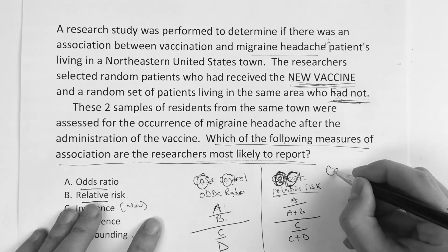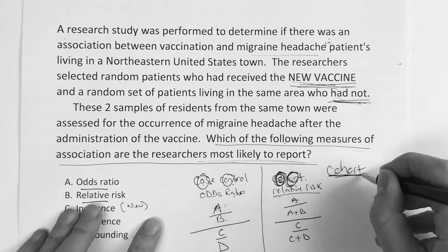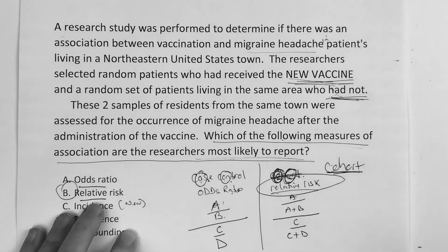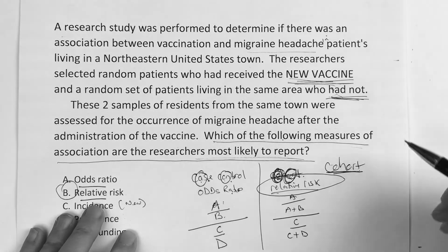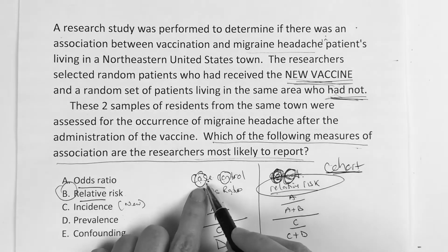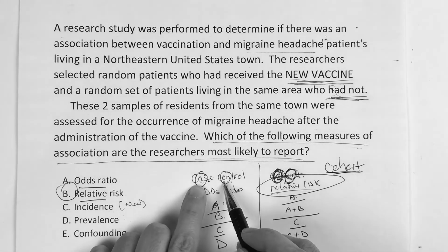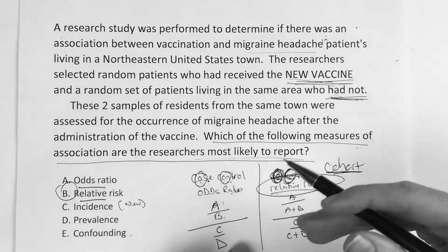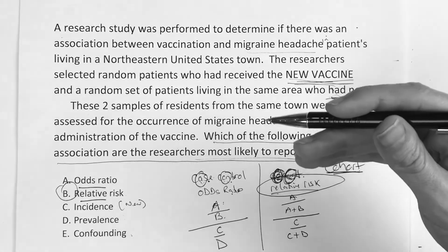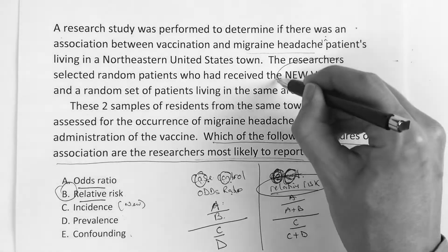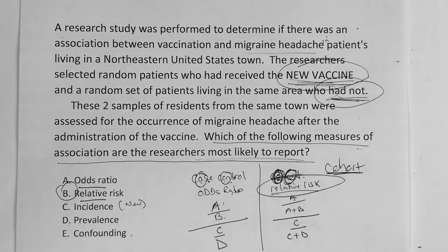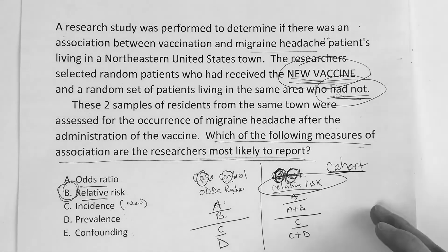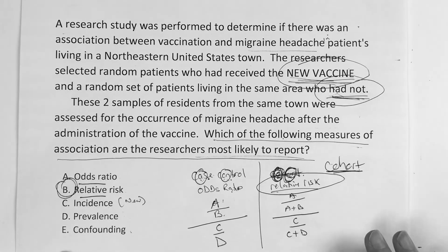At the beginning of this study, did anybody have migraine headaches? No — nobody had the disease when the study started. The only difference was one group had the vaccine and one group did not. Nothing about migraines at the start. So at the beginning, they're looking at a cohort. And if you say cohort, the next words out of your mouth better be relative risk. The key point: case control — one group has disease, one does not. Cohort — neither group has the disease. They compare the incidence of disease between the exposed and the not exposed. So on this one, the answer is B, relative risk. Thank you for sending in these questions — I hope the video was helpful.